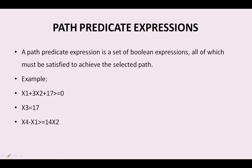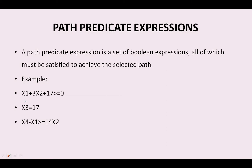What are the various examples of the path predicates? The first example of the path predicate is: x1 plus 3x2 plus 17 greater than or equal to 0, and x1 plus 3x2 plus 17 greater than or equal to 0, and the second one is x3 is equal to 17, and x4 minus x1 greater than or equal to 14x2. Here all these are the set of boolean expressions; they can give either result true or result false. These are the collection of various kinds of boolean expressions.